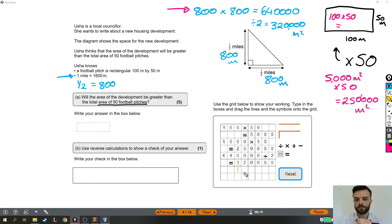Will the area of the development be greater than the total area of the 50 football pitches? So this is the development, this is the football pitches. Is the area of the development greater than the area of the 50 football pitches? Yes, because the development is 320,000 while the pitches are only 250,000. So the answer is yes.